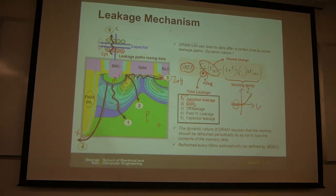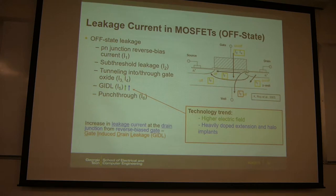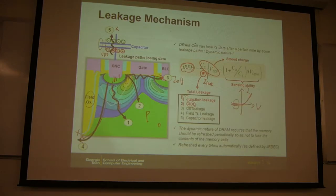You cannot avoid leakage even if your capacitor is perfect. So let's look at number two in more detail. Number one is PN junction reverse bias, and number three is the off-current of those transistors — those are very common and should have been covered in standard device transistor courses. But number two, this so-called GIDL effect, is something unique here.